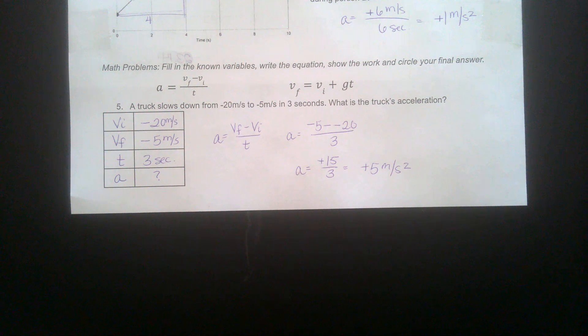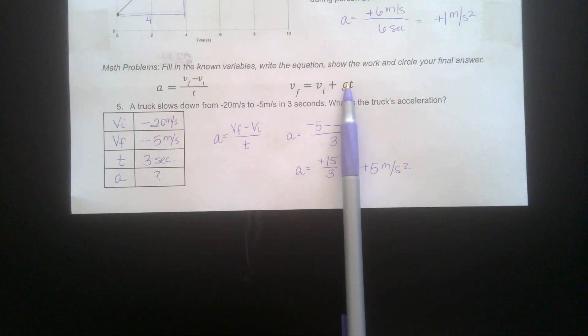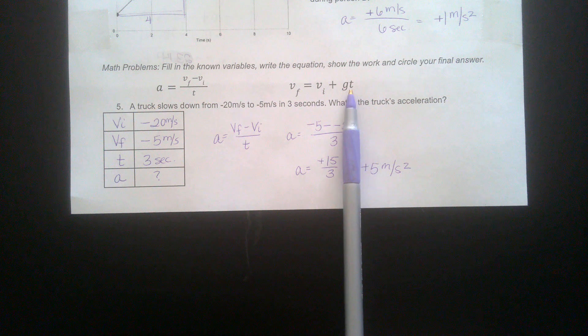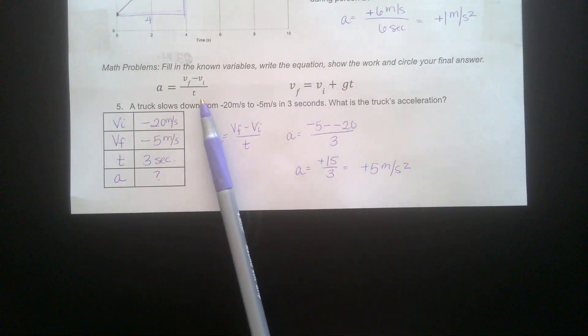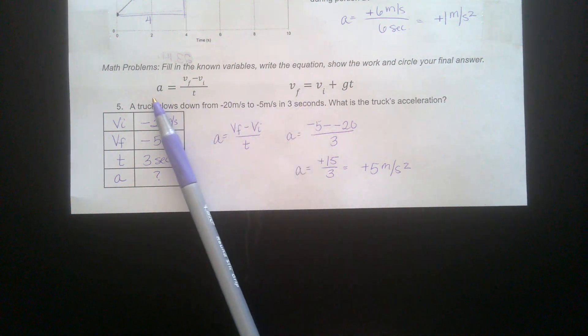The other one is for objects in free fall because instead of an A here, we have a G over here. The G stands for the acceleration of gravity, which is always negative 9.8 meters per second squared. When something is falling in the air or being thrown upwards, you're going to use the G value. They're the same things rearranged, except instead of an A, we have a G.